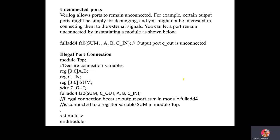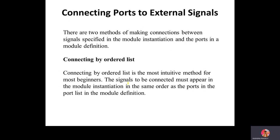Default simulators will append zeros if bit widths are not matching and still perform the operation, but a warning is typically issued when widths do not match. If connected ports are not perfectly defined, you will get an unconnected port error. Verilog allows ports to remain unconnected — for example, certain output ports might be simply for debugging, or you may not be interested in connecting them to an external signal. If C_out is left unconnected, that is a warning you will receive. Illegal port connections must also be avoided.